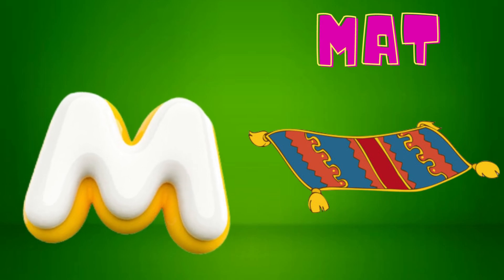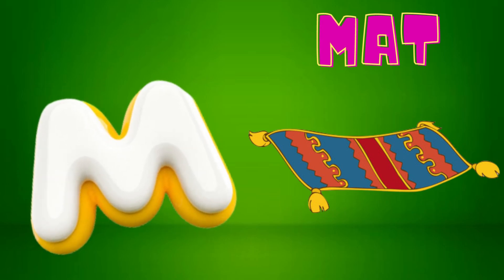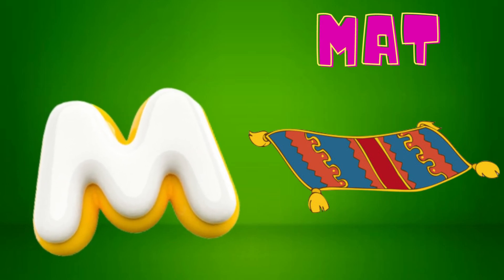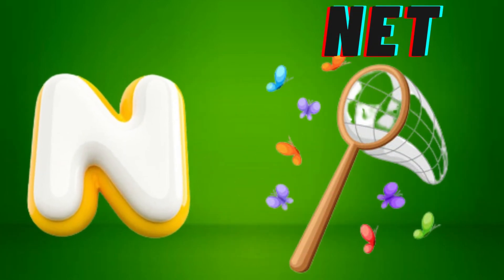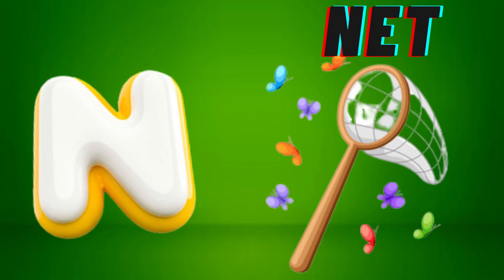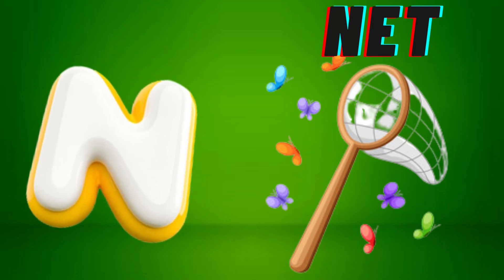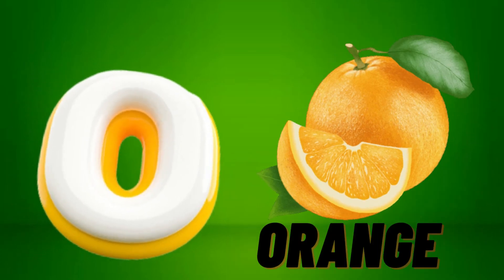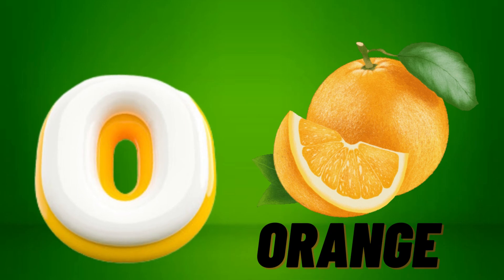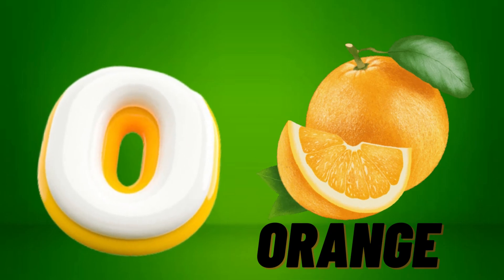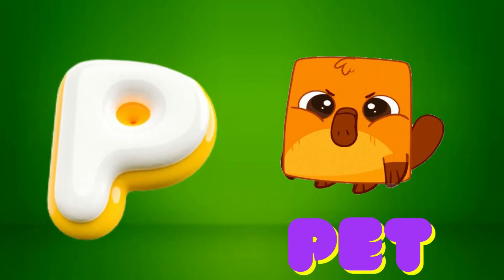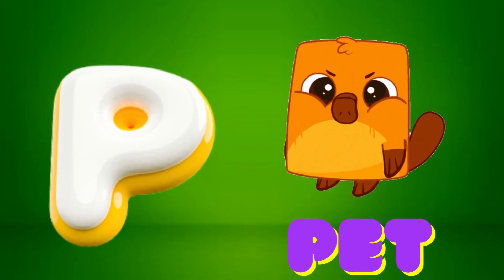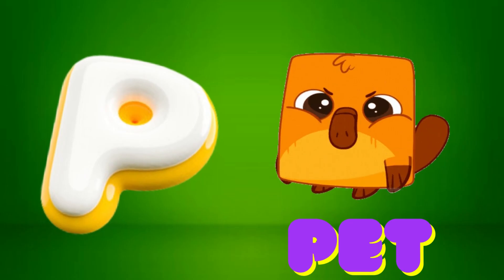M is for Mat, M-M-Mat. N is for Net, N-N-Net. O is for Orange, O-O-Orange. P is for Pet, P-P-Pet.